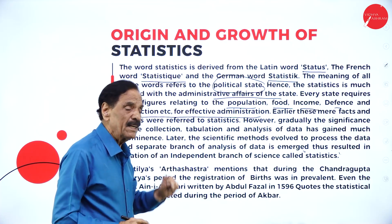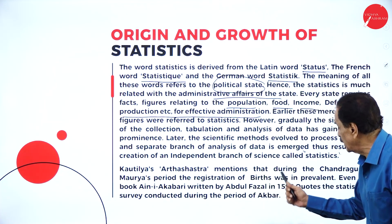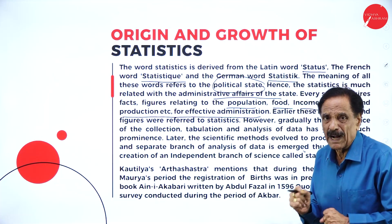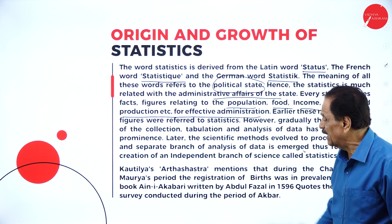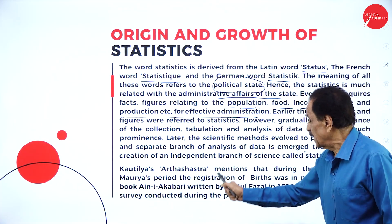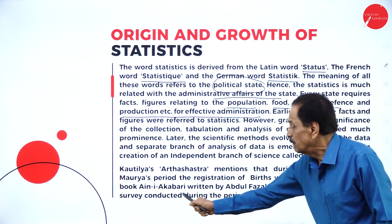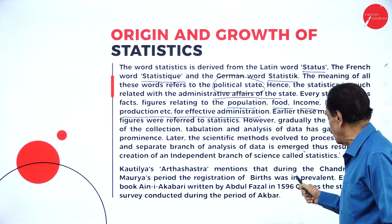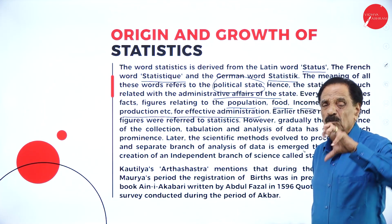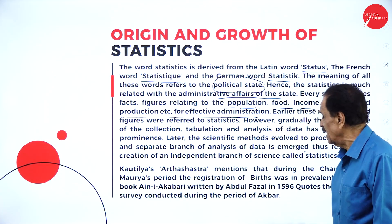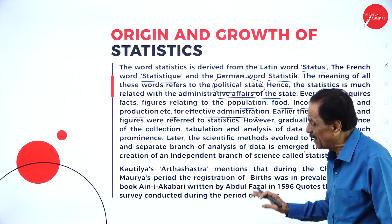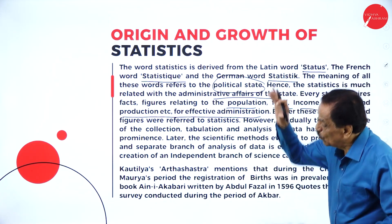Kautilya's Arthashastra mentions that during Chandragupta Maurya's period, the registration of births was in practice. Also, the book Ain-i-Akbari written by Abdul Fazal in 1596 documents a statistics survey conducted during the period of Akbar. Both books provide important facts and figures about population and income, showing that statistics prevailed in those days as well.